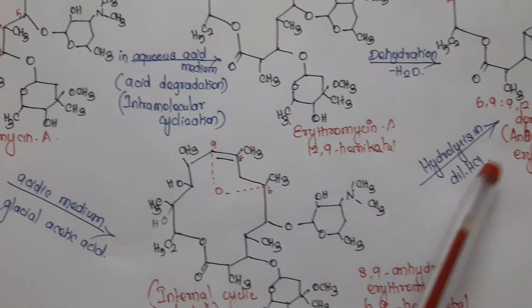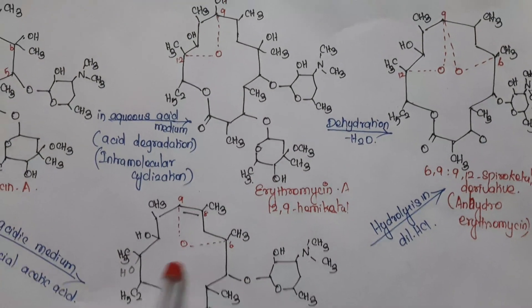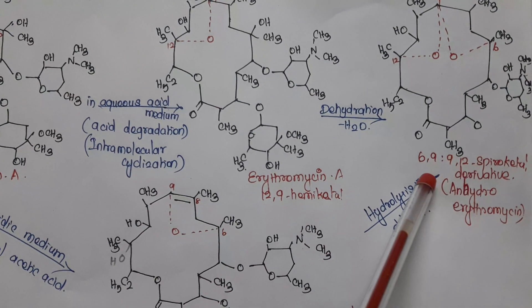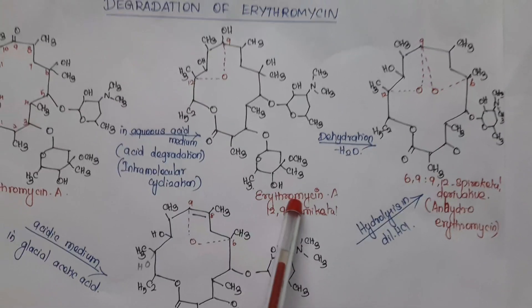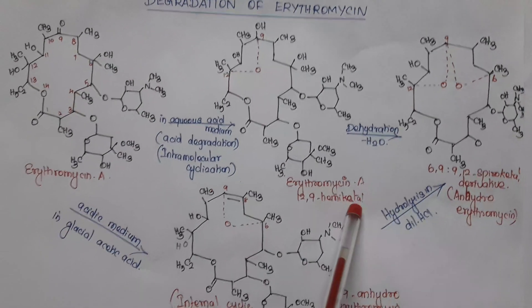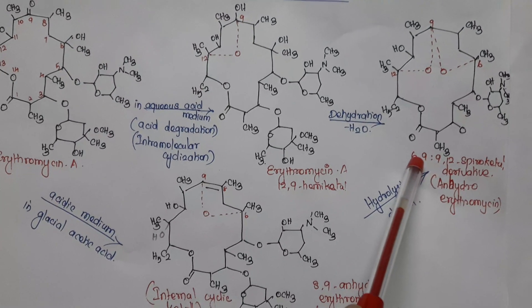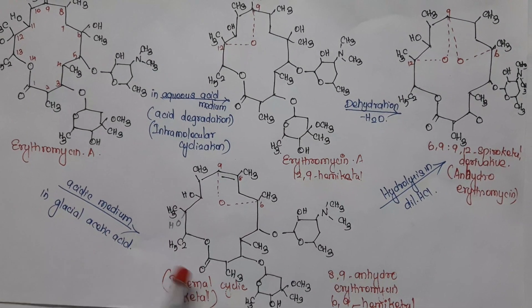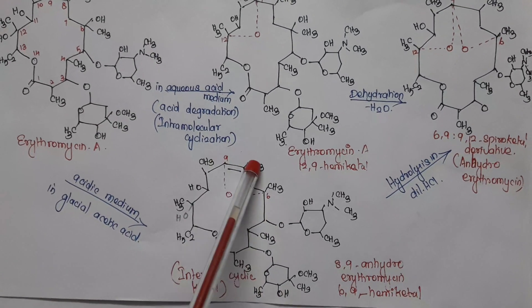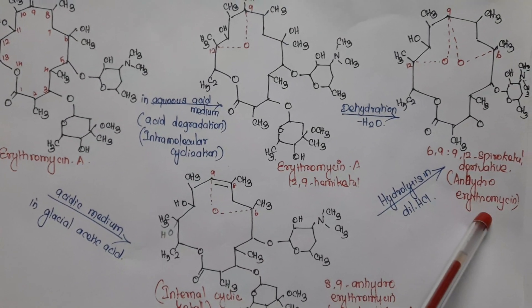On hydrolysis in the presence of dilute hydrochloric acid, there is formation of a spiro-ketal derivative. So directly we get 6-9-9-12 spiro-ketal derivative, that is called anhydromycin. To summarize: erythromycin in aqueous acidic medium first gives erythromycin 12-9 hemiketal. On dehydration, we get anhydroerythromycin, that is the 6-9-9-12 spiro-ketal derivative. In the presence of glacial acetic acid, we get internal cyclic ketal — 8-9-anhydroerythromycin 6-9-hemiketal — and that on hydrolysis gives anhydroerythromycin.